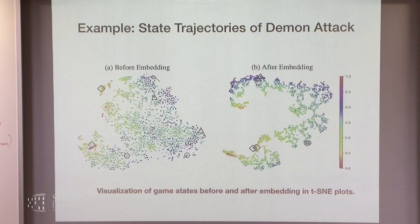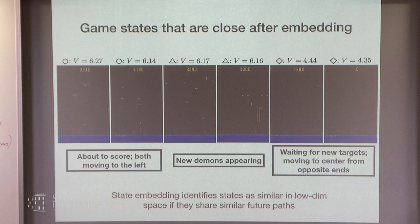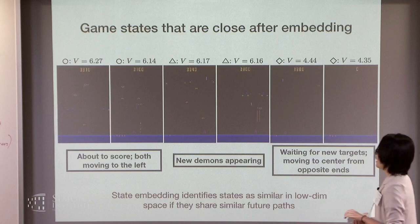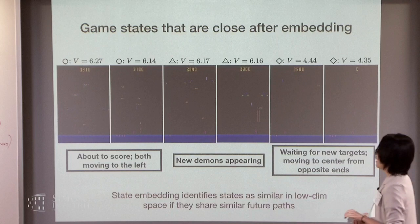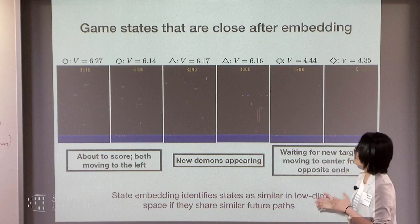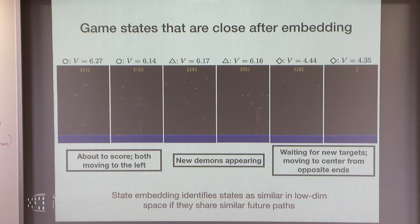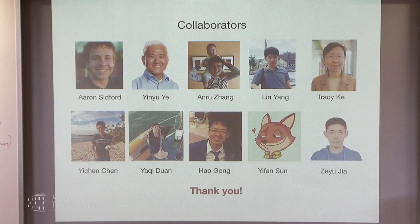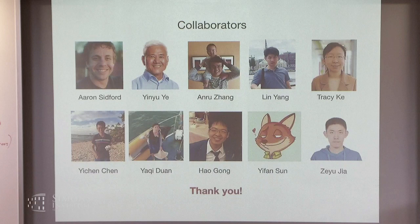Finally, in an experiment with DQN on Atari game trajectories: by reducing the dimensionality of game states using the diffusion map embedding, one can identify pairs of game states that have large distance in their original form but are very close after embedding. These pairs have interesting physical meanings about the current strategic state of the game. There are many open problems in reinforcement learning — how to understand it from statistical and online learning perspectives, and how to do dimension reduction effectively while doing reinforcement learning. Hopefully we can work together on these.